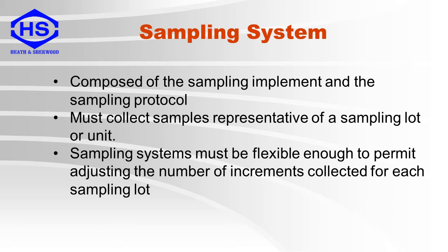A sampling system is composed of a sampling implement and a sampling protocol. It must collect samples representative of the sampling lot or unit. Sampling systems must be flexible enough to permit adjusting the number of increments collected for each sampling lot, as this can affect the sample precision.